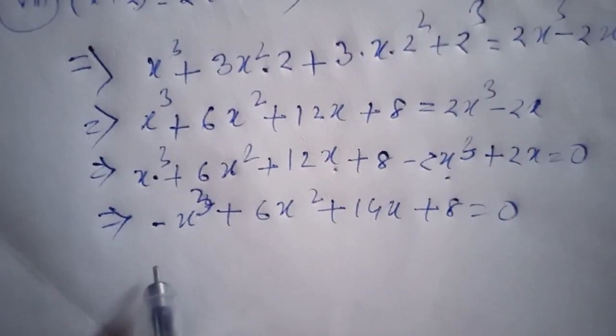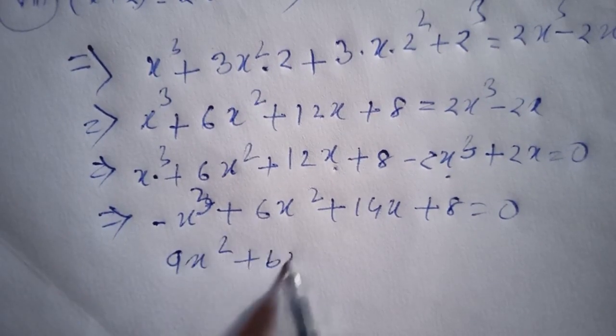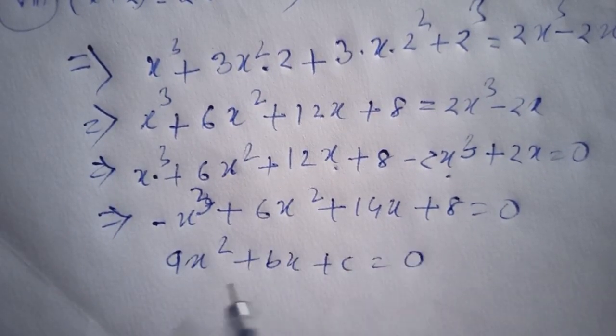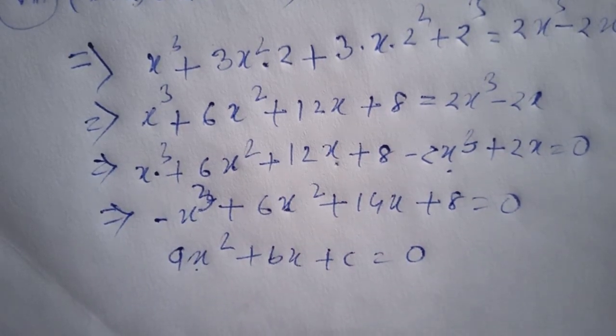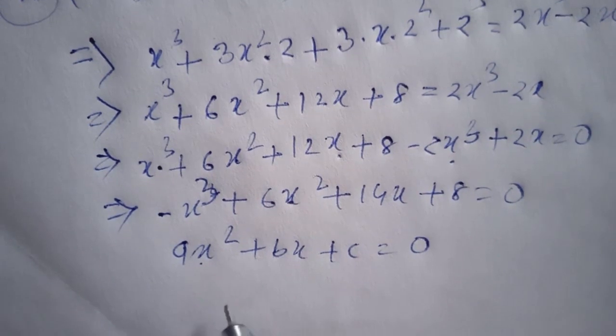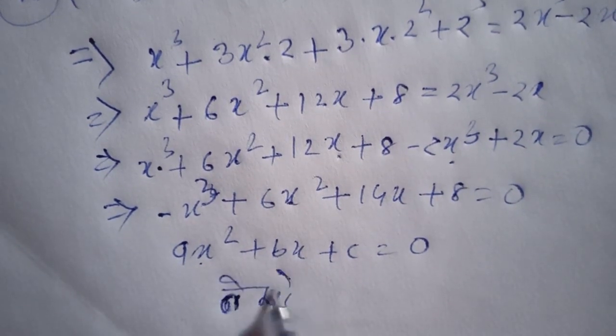We get negative x cubed plus 6x squared plus 14x plus 8 equals 0. Comparing with the general form, a is related to the x cubed coefficient, which here would be negative 1.